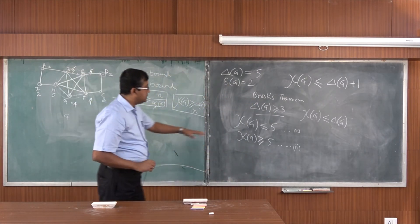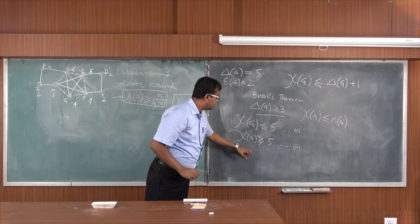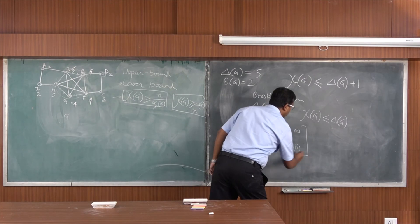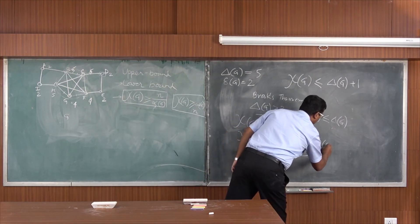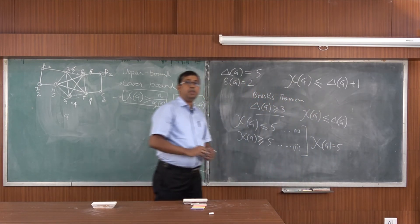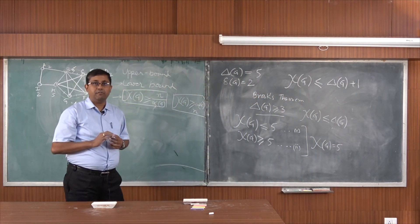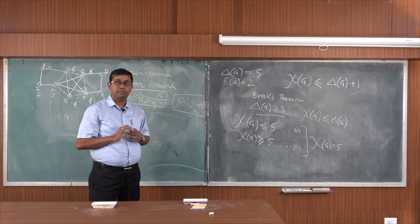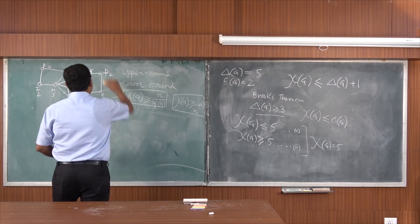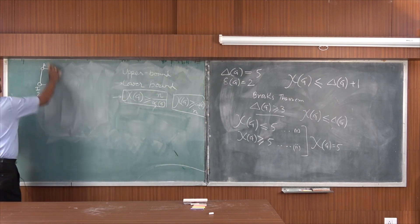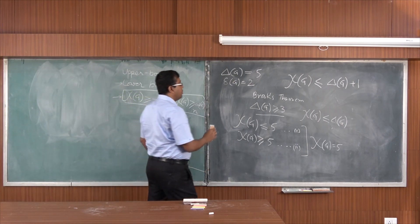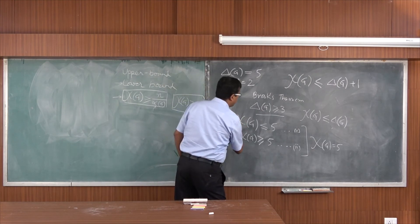We now have χ(G) ≤ 5 and χ(G) ≥ 5. To satisfy both conditions simultaneously, we must conclude that χ(G) = 5. So the chromatic number for this particular graph is 5. This is a simple but elegant solution using both the upper and lower bound theorems together.